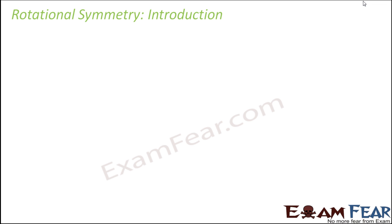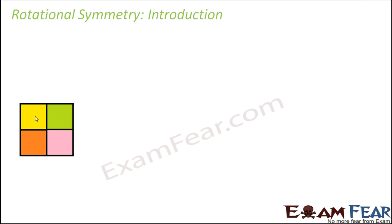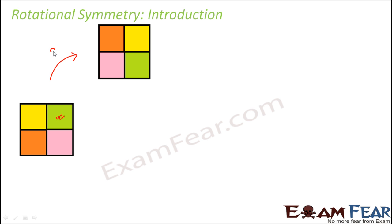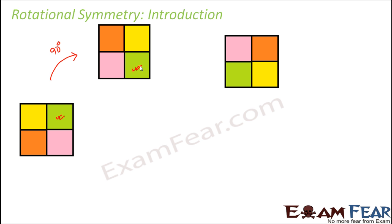So rotational symmetry — what do you think could be rotational symmetry? Something related to rotation? Let's look at this colored square and see what happens when we rotate it. Observe very carefully that here you have four different colors inside the square. The green color right now is here. What happens when we rotate it by 90 degrees? The green color shifted from here to here.